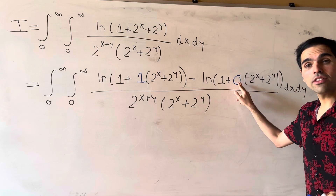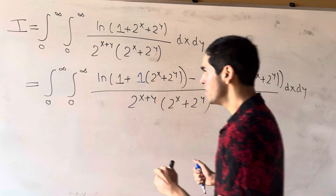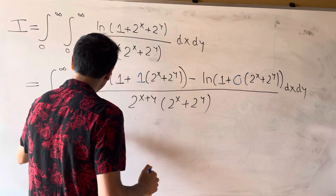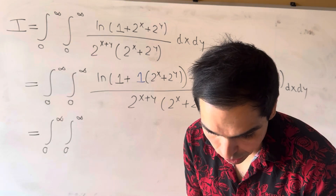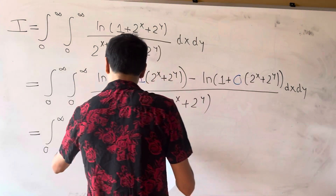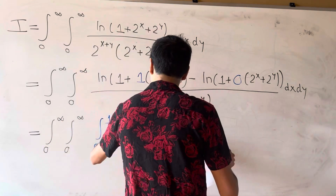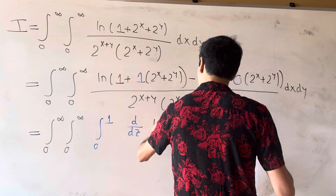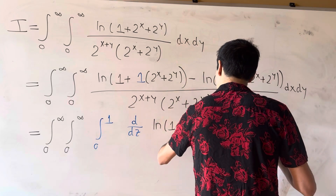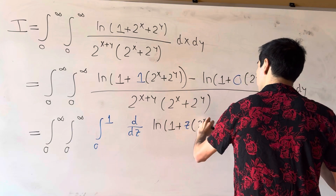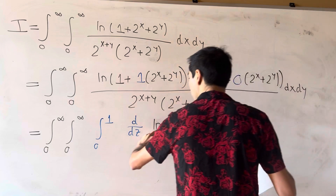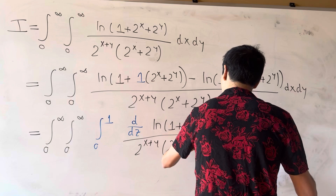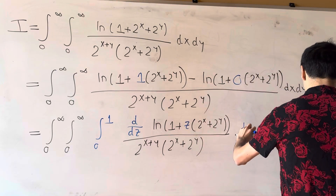It turns out this looks almost like a derivative. That's the same thing as the double integral of the integral from 0 to 1 of d/dz of ln(1 + z·(2^x + 2^y)) over 2^(x+y) times (2^x + 2^y), dz dx dy.